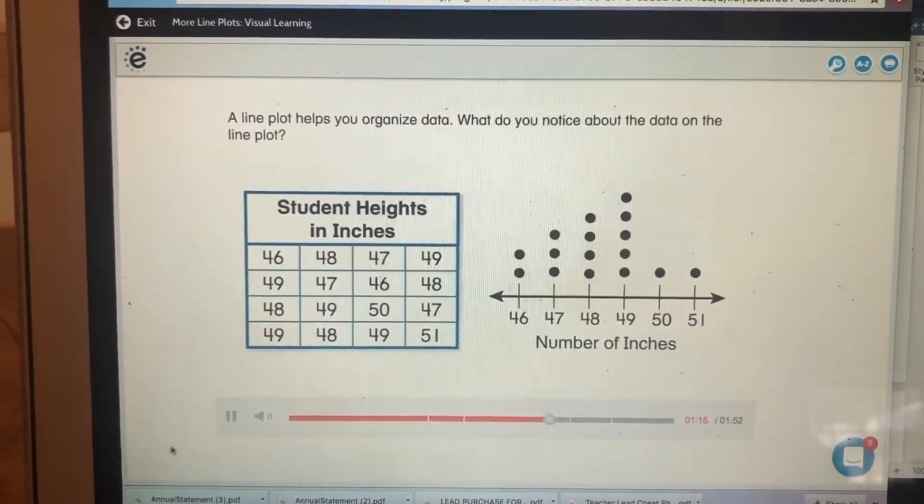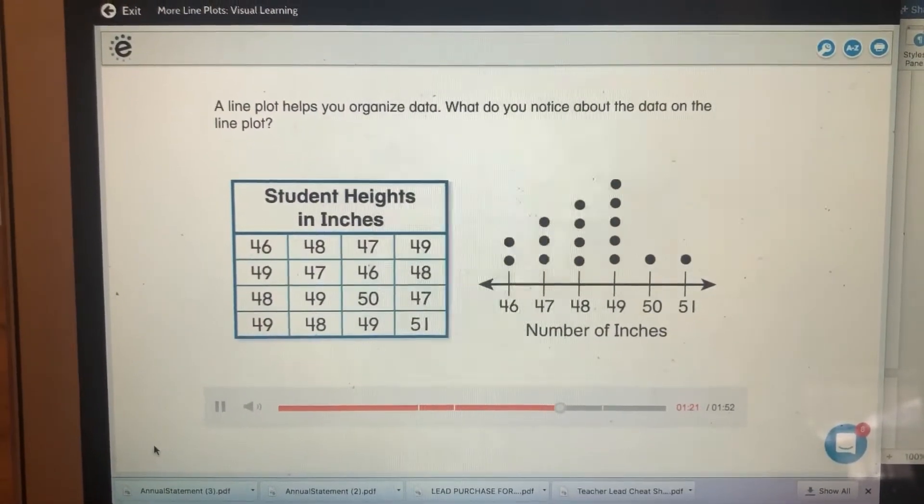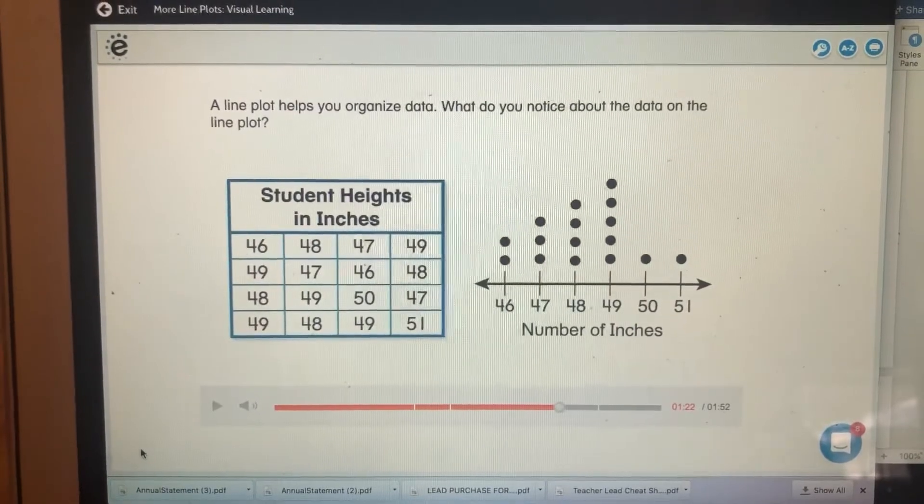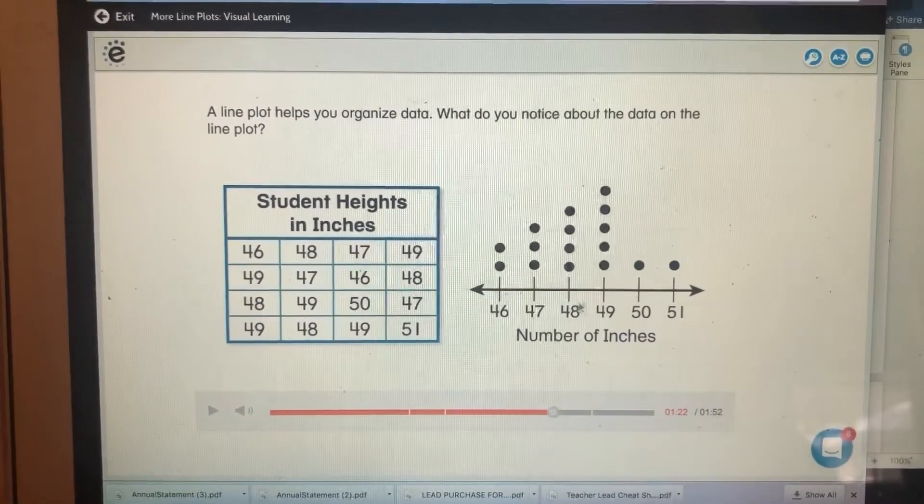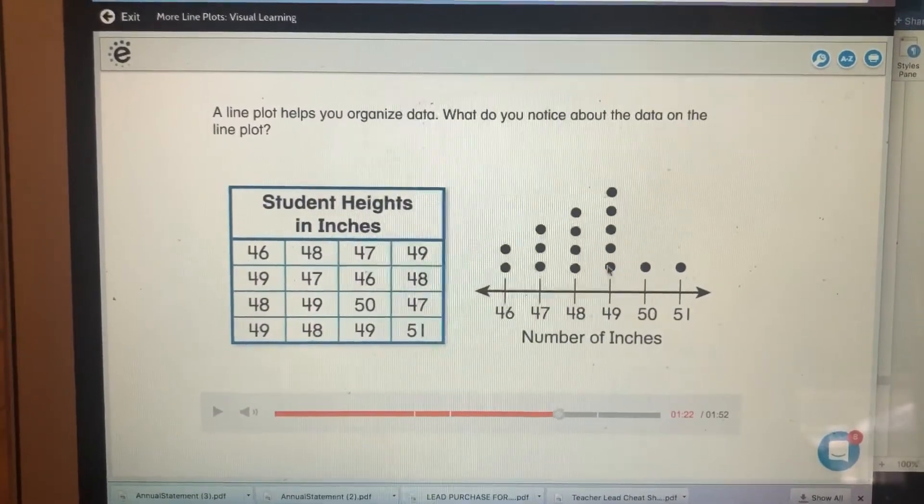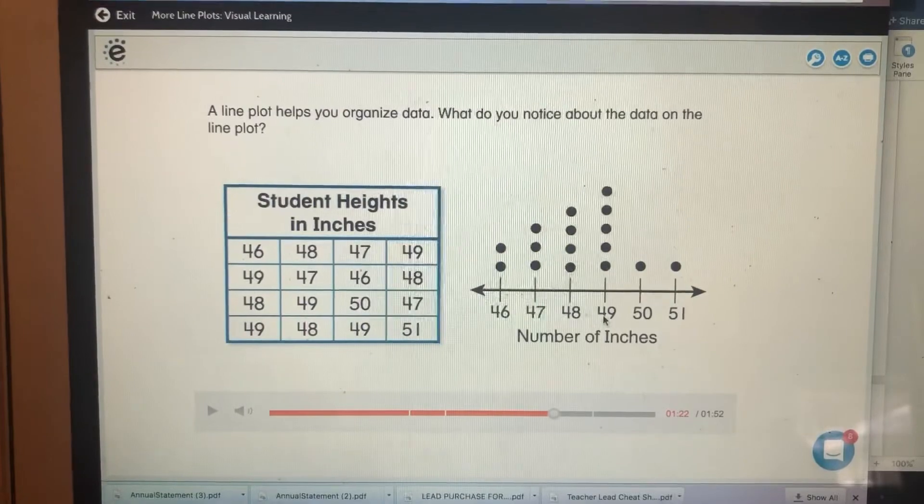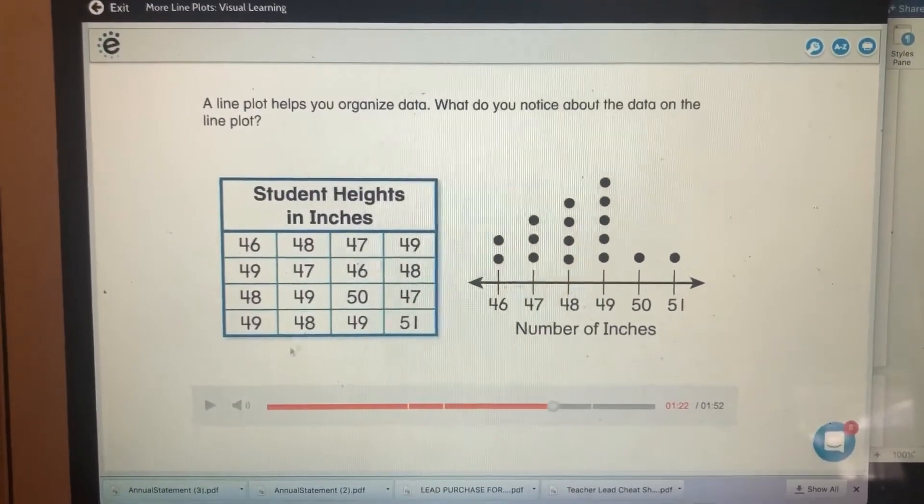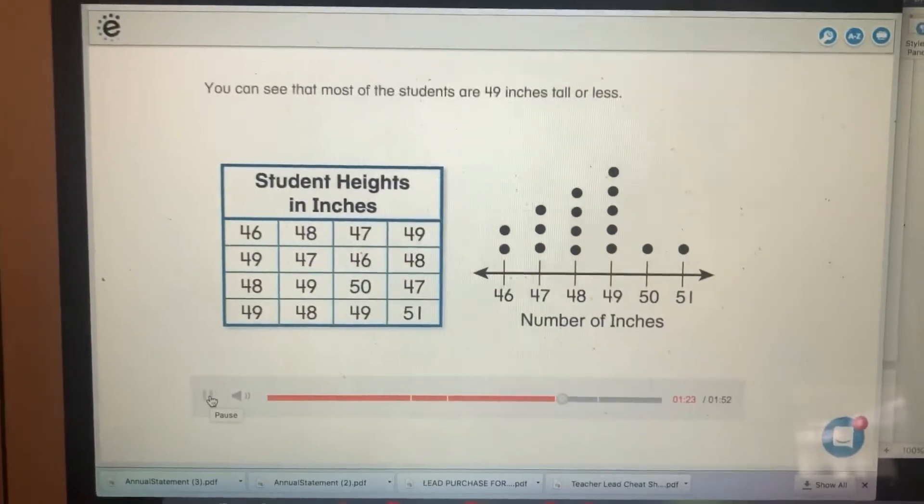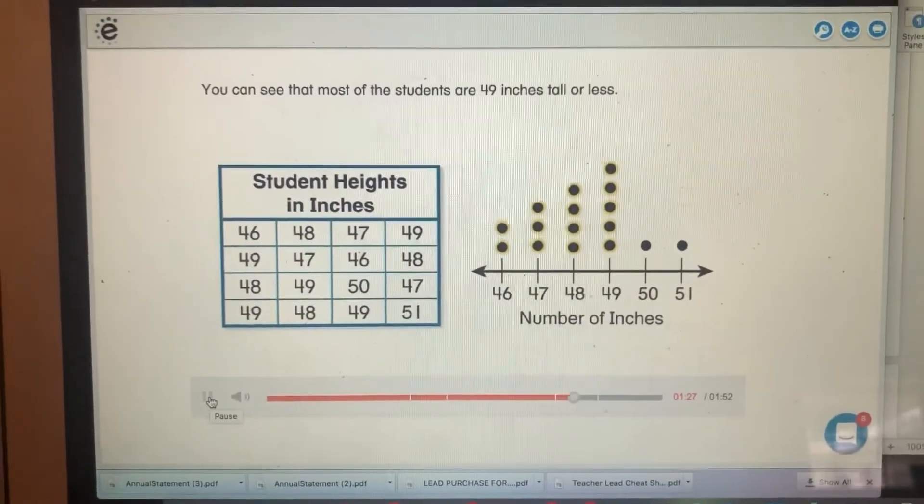A line plot helps you organize data. What do you notice about the data on the line plot? The height that there is the most students is 49 inches tall. You can see that most of the students are 49 inches tall or less.